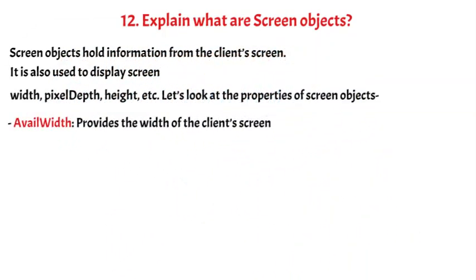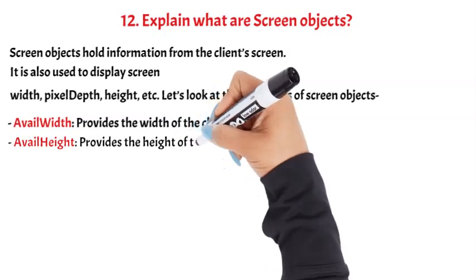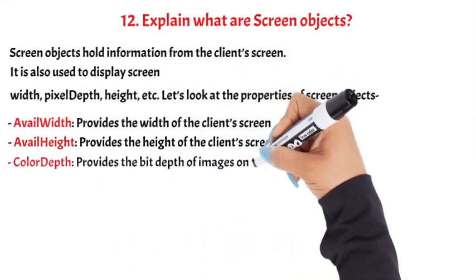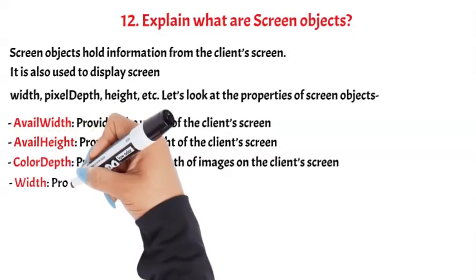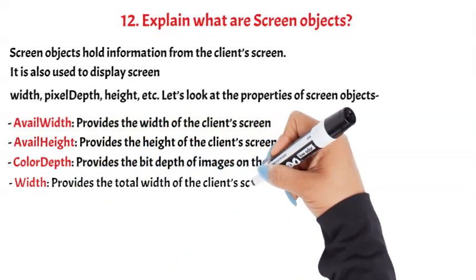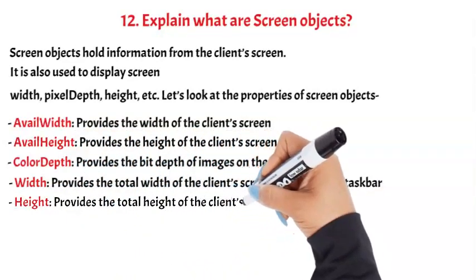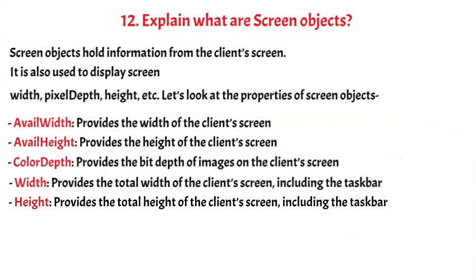availHeight - provides the height of the client's screen. colorDepth - provides the bit depth of images on the client's screen. width - provides the total width of the client's screen including the taskbar. height - provides the total height of the client's screen including the taskbar. Question 13.